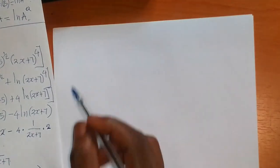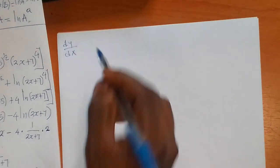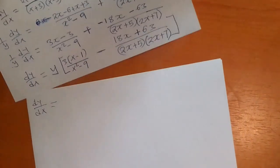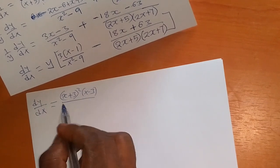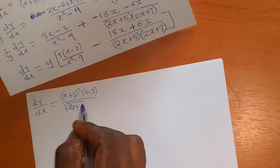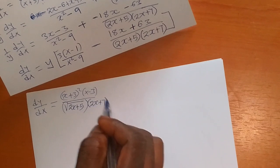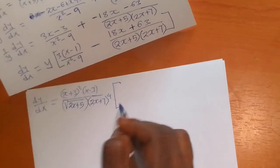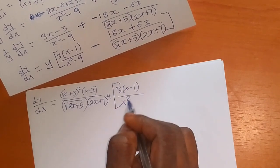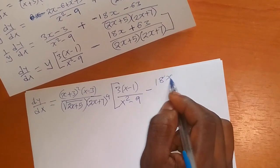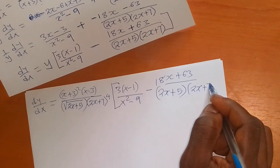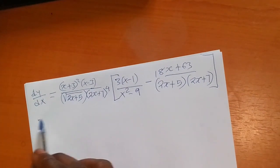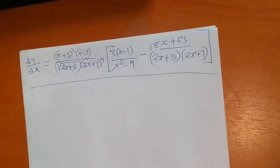Substituting the value of y back in, where y = (x+3)²(x−3) / [√(2x+5)·(2x+7)⁴], we get dy/dx equals that original function times {[3(x−1)/(x²−9)] − [(15x+63)/((2x+5)(2x+7))]}. That will be the derivative of that function. If there is a mistake somewhere, let me know in the comments.